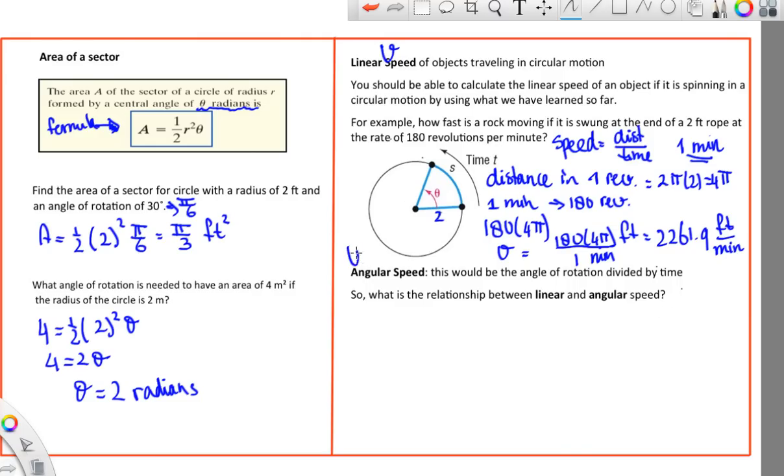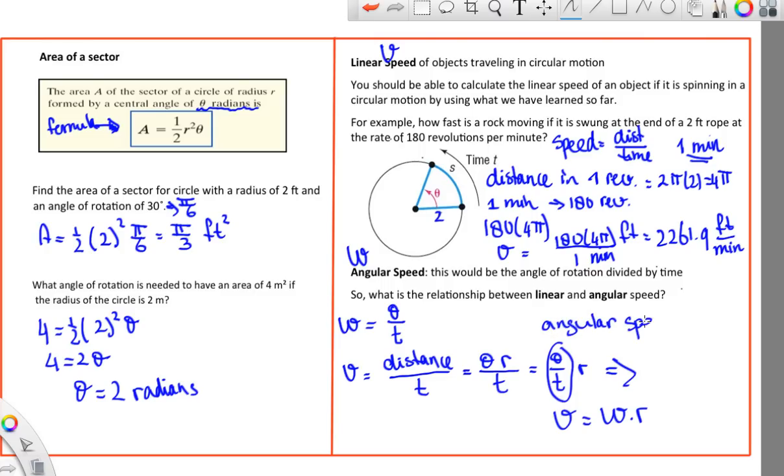Angular speed, which is usually shown with this little omega, is the angle of rotation divided by the time. So what's the relationship between linear and angular speed? We know that speed is the distance divided by the time. And the distance in a circle that some object travels is the angle times the radius, as long as the angle's in radians. So we get theta times r over t, and you can sort of see we get theta over t times r, and that is angular speed. So we get the conclusion that linear speed is angular speed times the radius.